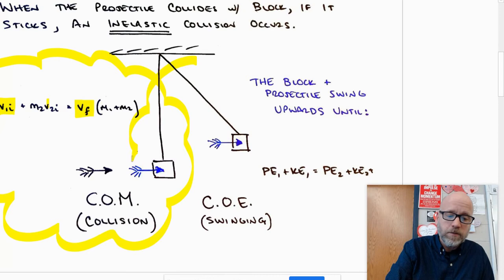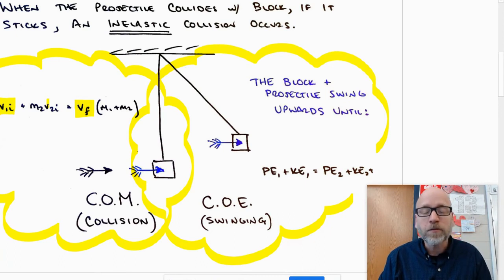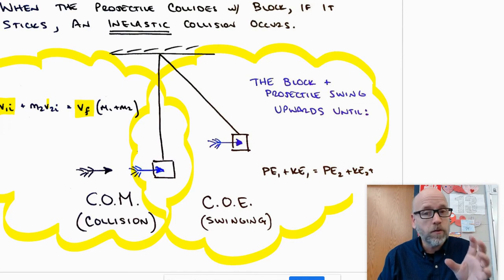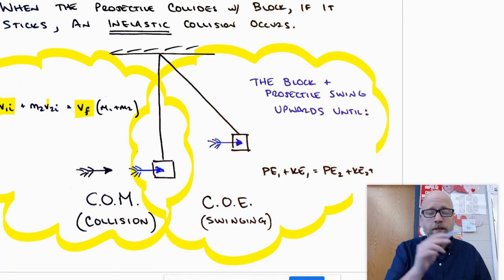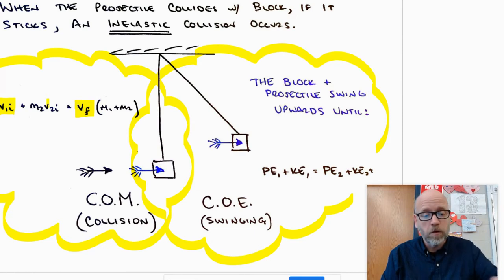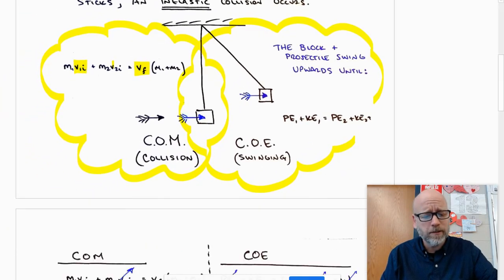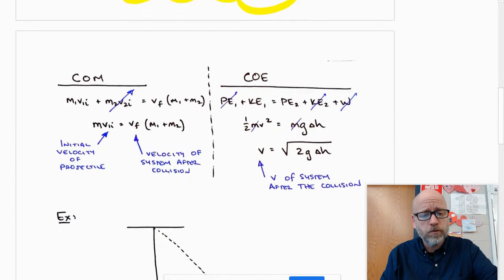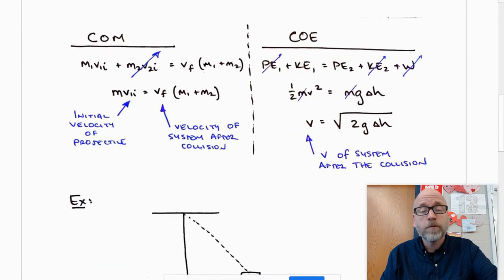Fortunately for us, there's another part to this. After the collision, we can utilize conservation of energy. To recognize this is like a physics Venn diagram, do you see it? We can use conservation of energy because at the bottom that system is going to be all in the form of kinetic energy, and then it's going to swing up. That's going to convert all into potential energy. The potential energy we should be able to measure.